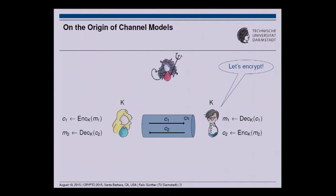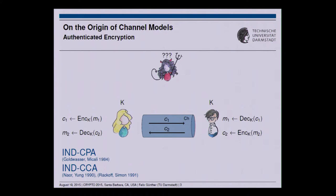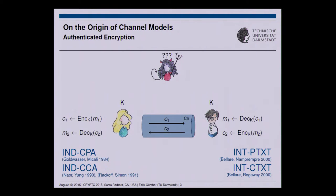The first idea that comes to mind is to encrypt — but as we are at crypto, let's encrypt authenticated. What we want is confidentiality, either in a weaker chosen plaintext attack indistinguishability sense, or in a chosen ciphertext attack sense. But we don't only want confidentiality; we also want integrity, either for the plaintext or the ciphertext. Ciphertext integrity is the stronger notion, and this forms roughly what we call authenticated encryption.